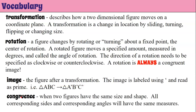Congruence is when two figures have the same size and shape — all corresponding sides and corresponding angles will have the same measures. So a rotation is a turn about the center of rotation using the angle of rotation and the direction clockwise or counterclockwise, resulting in an image labeled with prime, and it's a congruent figure of the original figure.